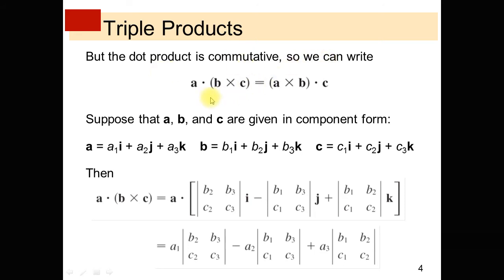Suppose that A, B and C are given in component form. Vector A whose components are A1, A2 and A3 can be written as A = A1i + A2j + A3k. B is another vector B = B1i + B2j + B3k, and C is a third vector whose components are C1, C2 and C3.